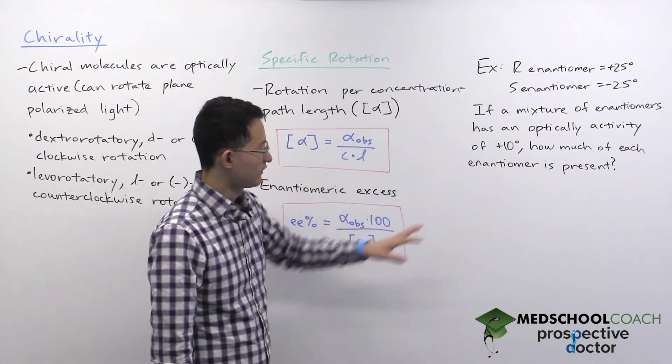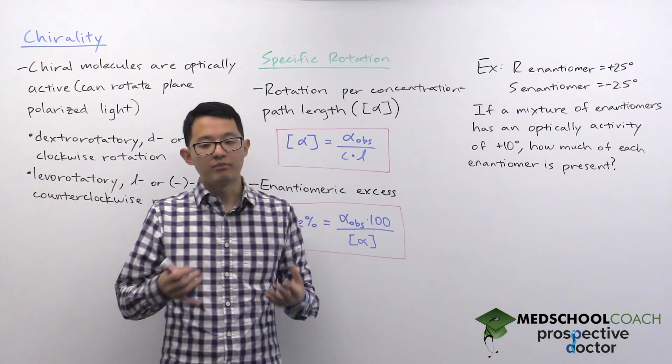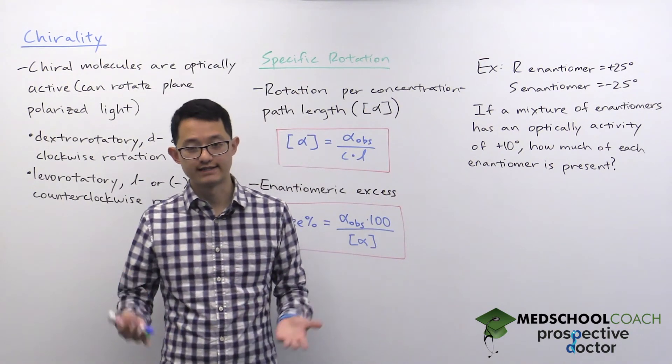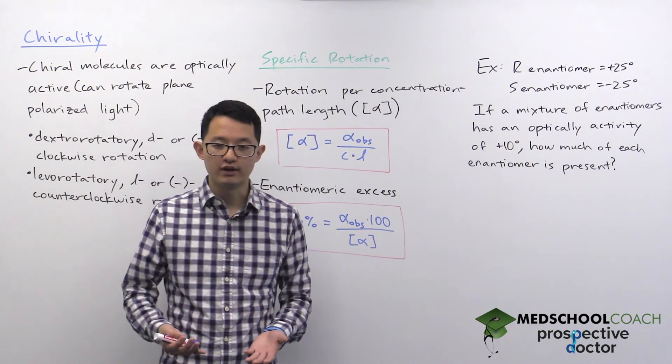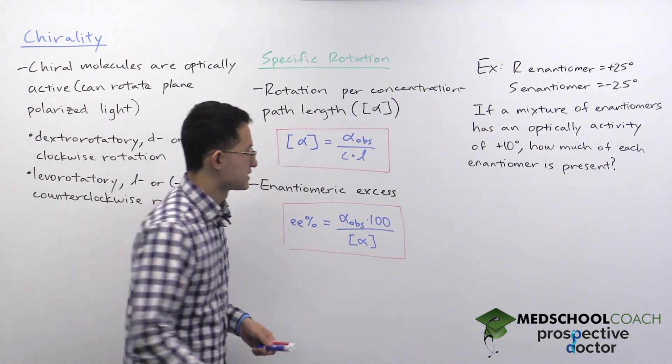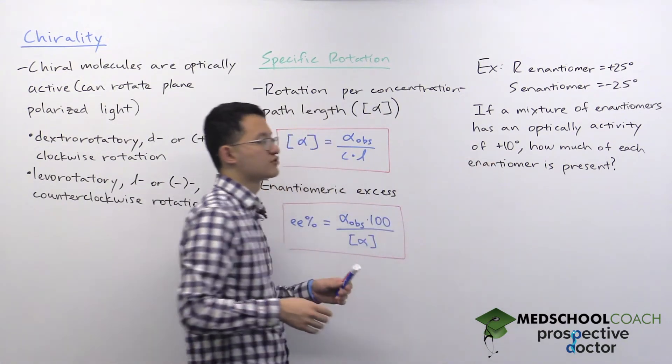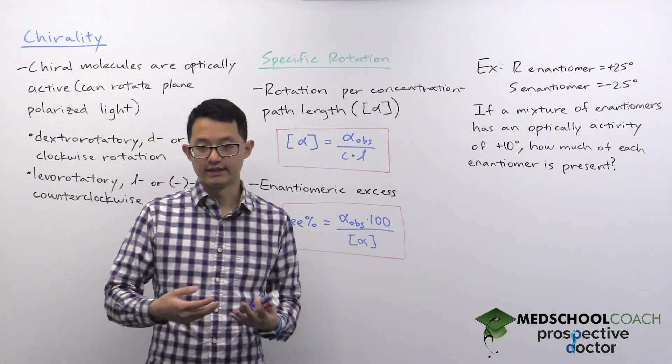The first thing you should know from this question is that the optical activity is not zero. If it were zero, it would mean that you have equal quantities of both the enantiomers present. But since it's not zero, that means we have more of one enantiomer.